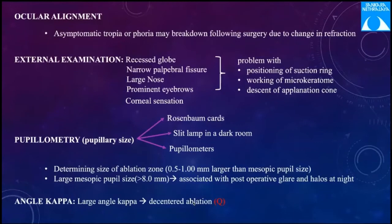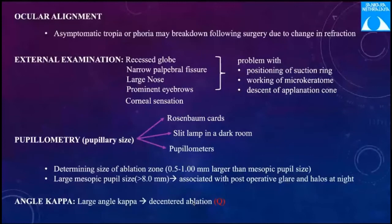For ocular alignment, Hirschberg's test, cover test, and ocular movements should be done because asymptomatic tropia or phoria may break down following a change in refraction. These patients can be given a trial of contact lens to simulate the post-op refractive outcome for a few weeks to check for any breakdown in ocular alignment. In external examination, conditions such as recessed globe, narrow palpebral fissure, large nose, and prominent eyebrows can pose problems with the suction ring, microkeratome, and descent of the infusion cone. Corneal sensations should also be checked.